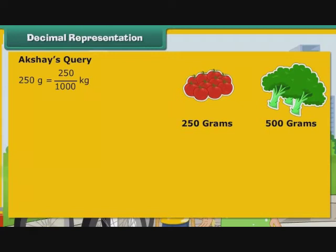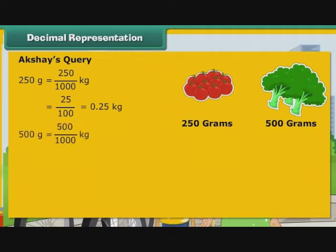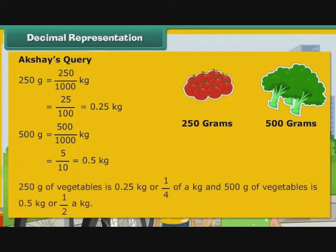Let us now express the vegetables Akshay's mother purchased as kilograms. 250 grams is equal to 250 by 1000 kg, that is equal to 25 by 100 kg, that is equal to 0.25 or 1 by 4 kg. 500 grams is equal to 500 by 1000 kg, that is equal to 5 by 10 kg, that is equal to 0.5 or 1 by 2 kg. So, 250 grams of vegetables is 0.25 kg and 500 grams of vegetables is 0.5 kg or half a kg.